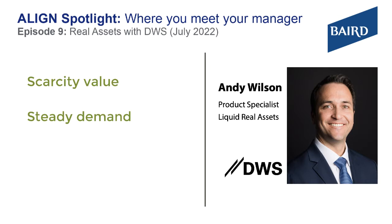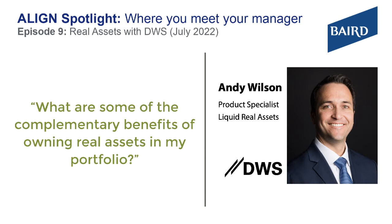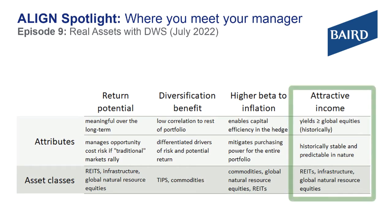The toll road you take to work, an office building that you work in, or those raw commodities that end up in the things we use every day, like gasoline or wheat that ends up in the bread we eat every morning. That demand profile is steady and provides the ability for these asset classes to pass on some of those higher input costs. So they provide that ability to hedge inflation over the long term. The question we get a lot is how does real assets help my broader allocation?